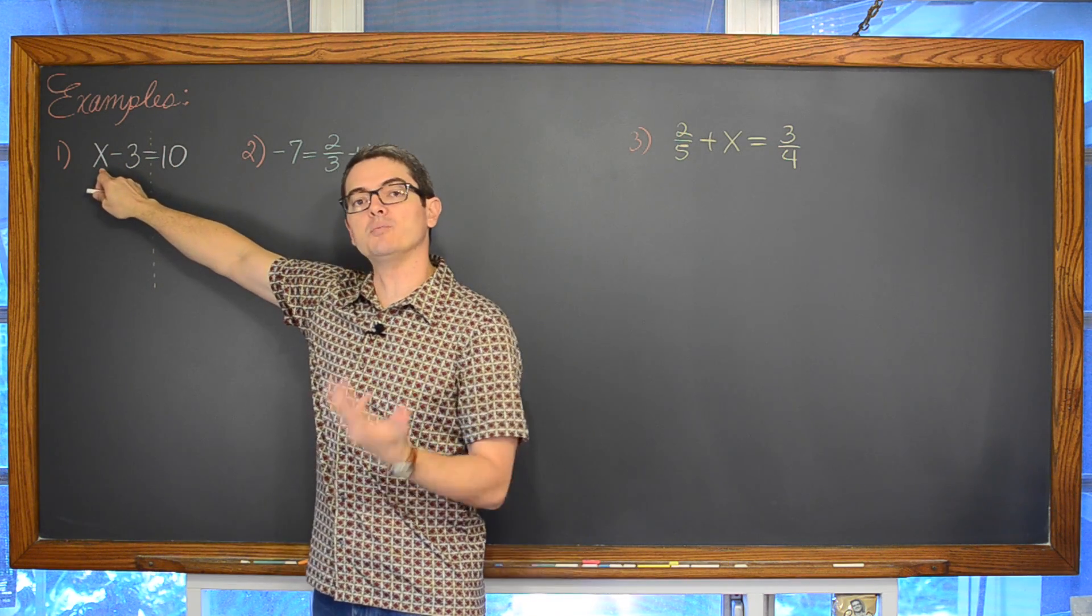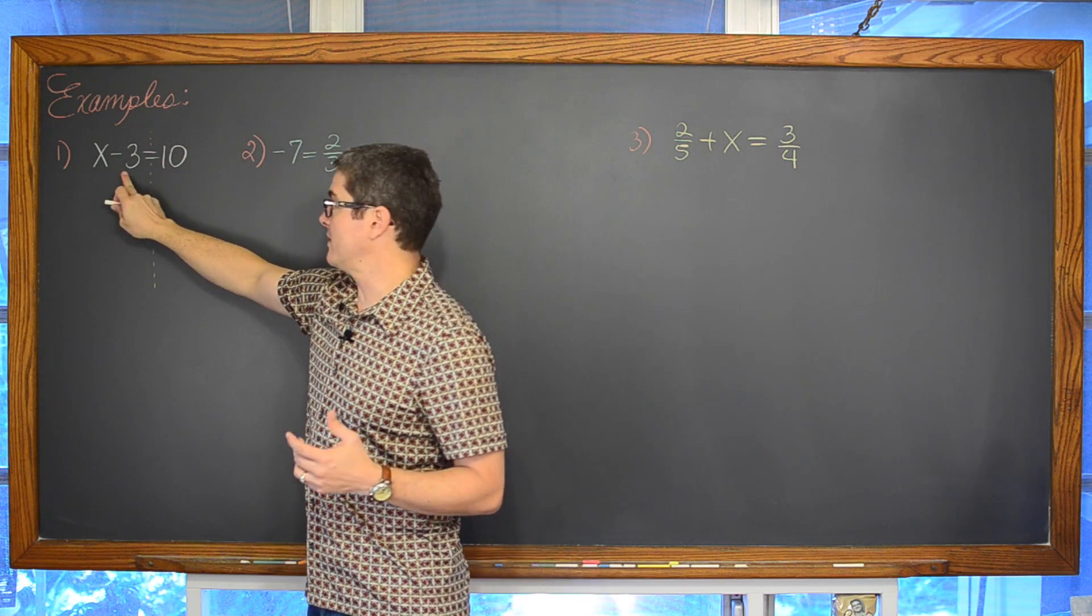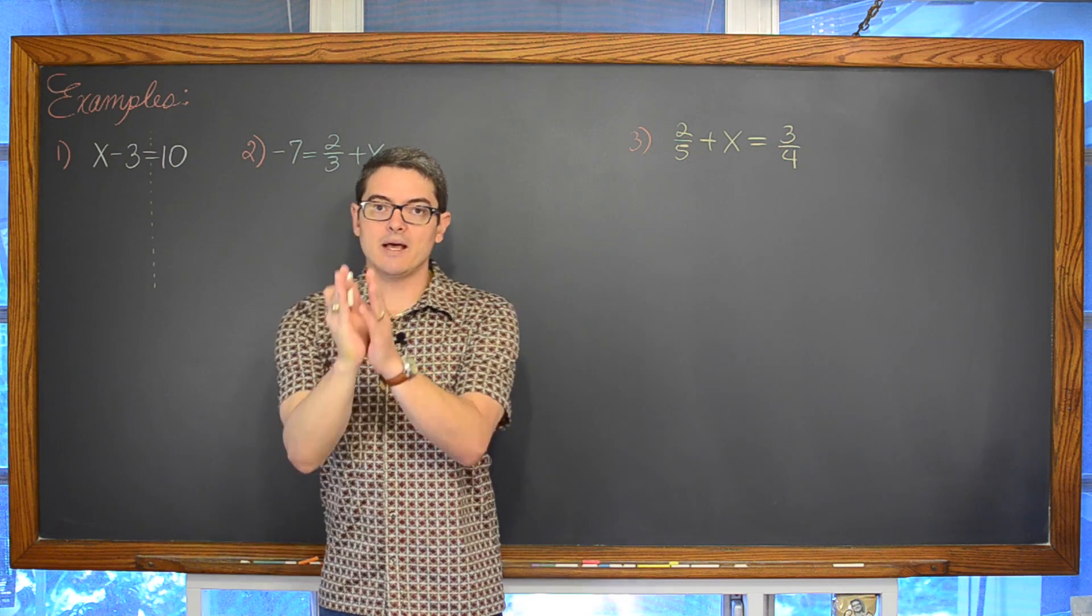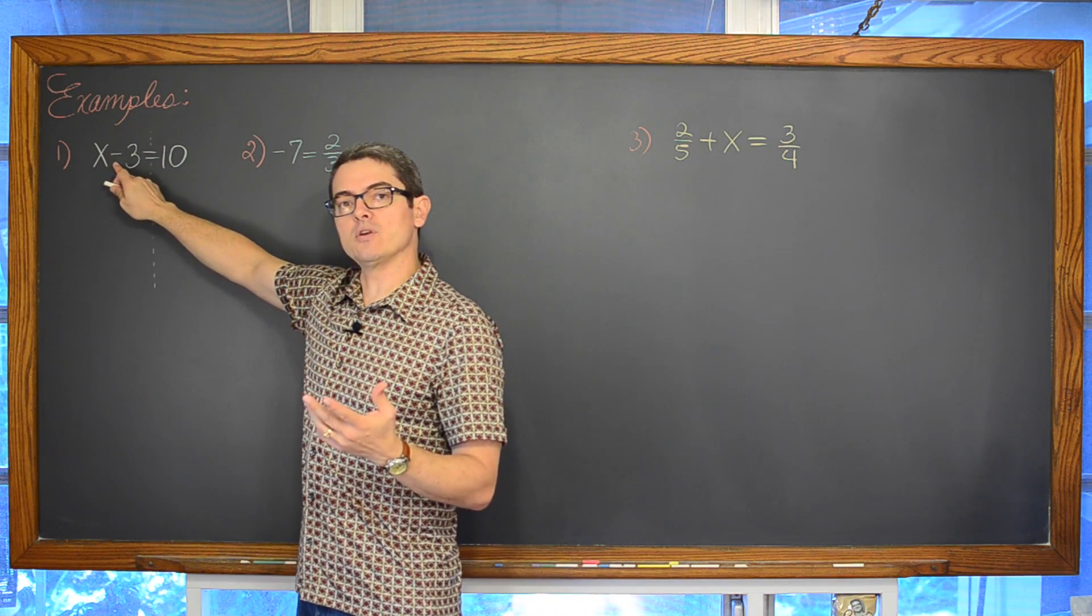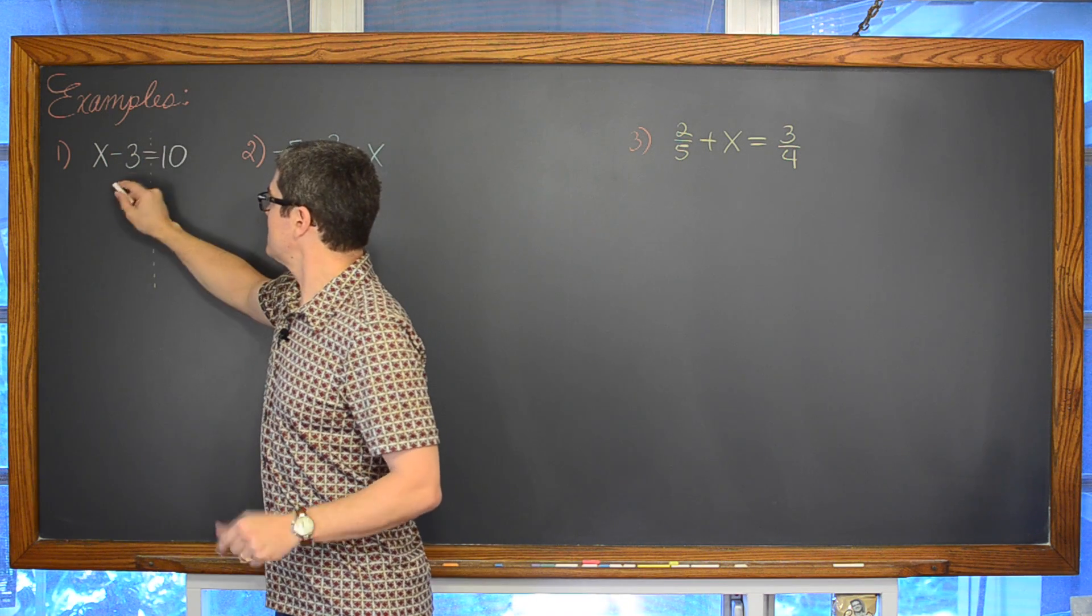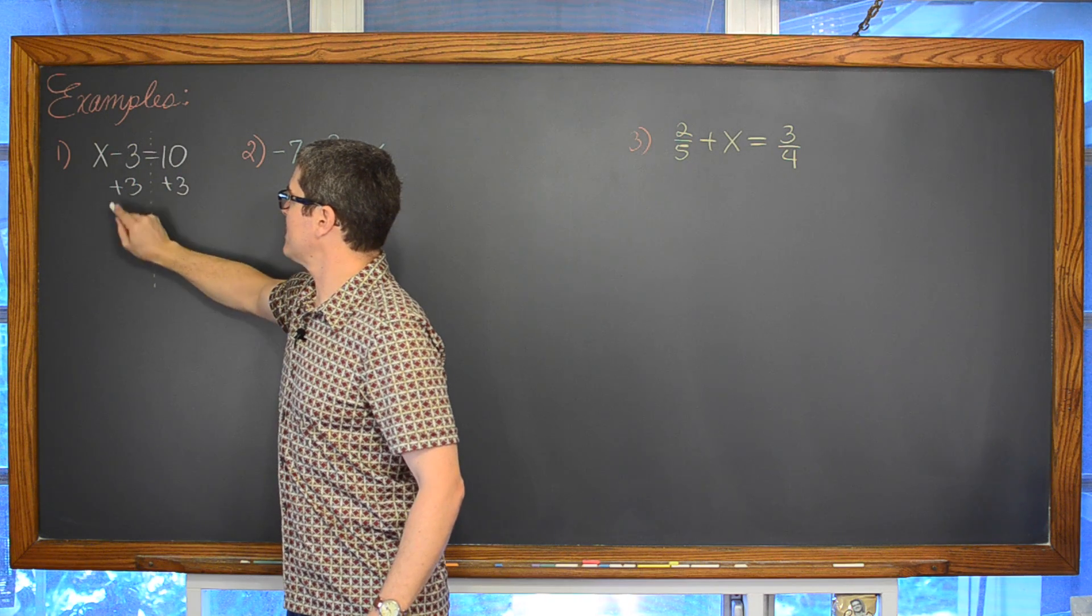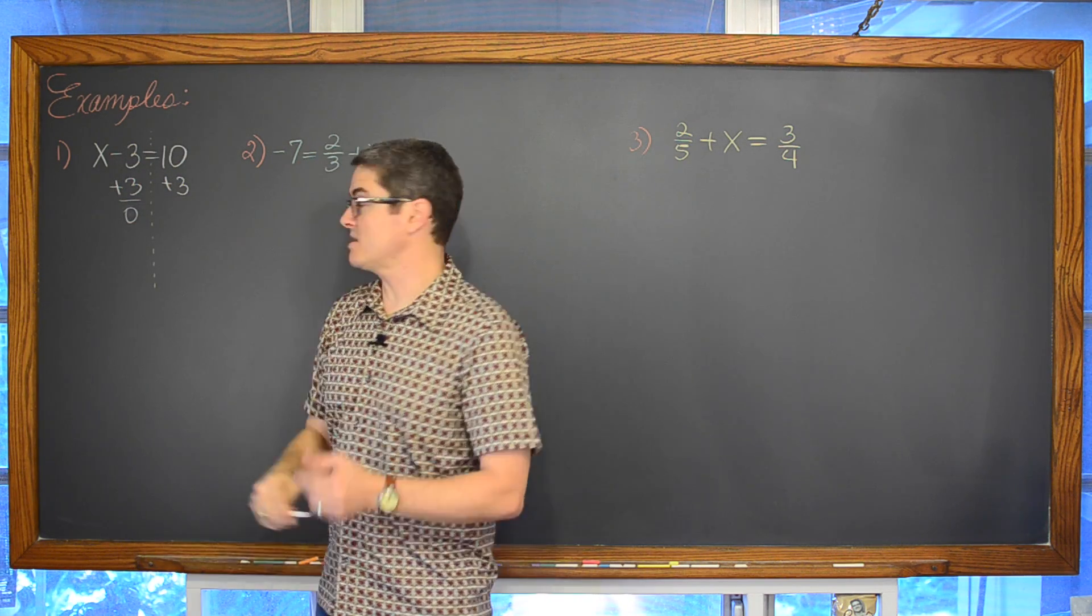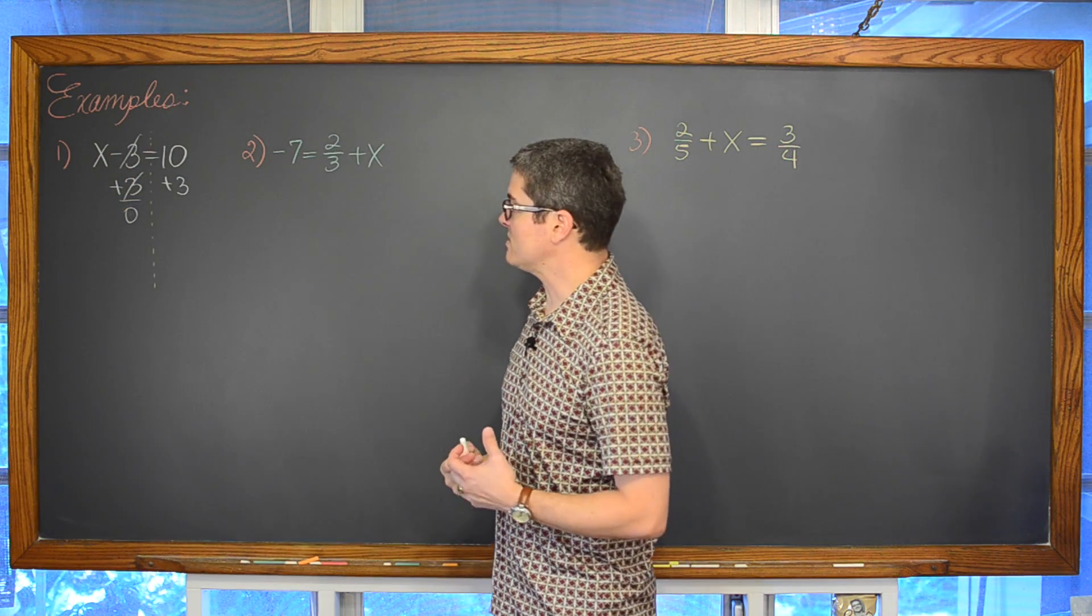So if I want to solve for x I want to completely isolate it, get it alone. I don't want any addition or subtraction with it. I don't want a number out front or any kind of division. I just want x equals and then whatever. So the inverse math operation of subtraction is addition. So we are going to add 3 to both sides of the equation. Negative 3 plus 3 is equal to 0.